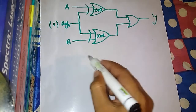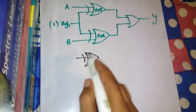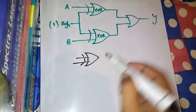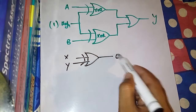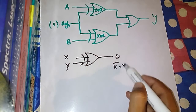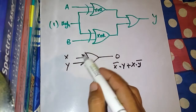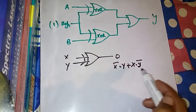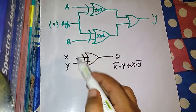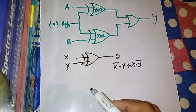Let me give you the symbolic representation of an XOR gate — this is a symbolic representation, not an actual circuit. For an XOR gate having signals X and Y, the output O is always X bar dot Y plus X dot Y bar. This is the boolean expression for the output of an XOR gate in symbolic representation.